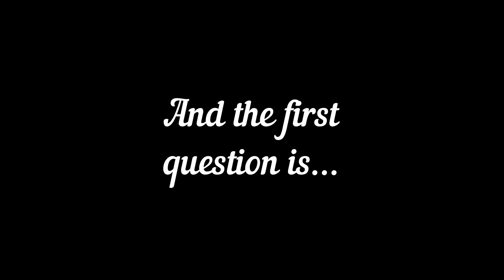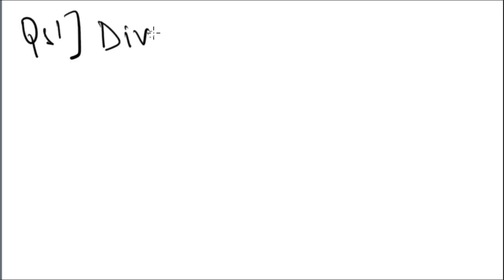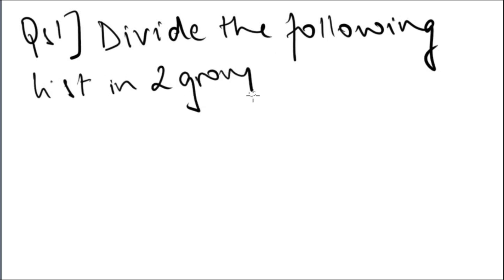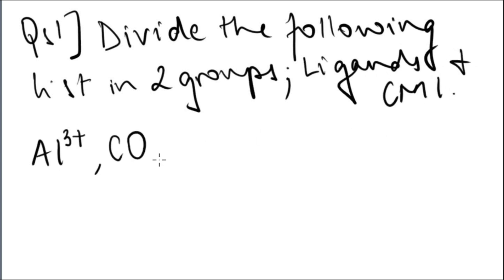Okay, now we shall start with the test. I will give you five seconds after telling you about each question, or you can just pause the video, try to find the answers, and then resume. The first question is: you have to divide the following list in two groups, one is ligands and one is central metal ion.